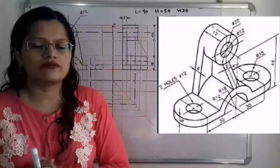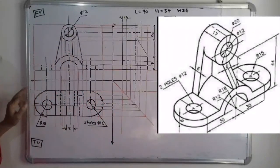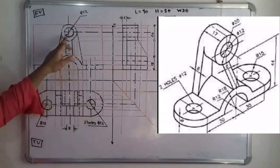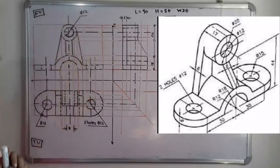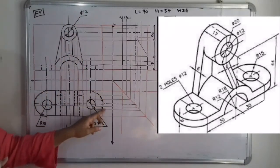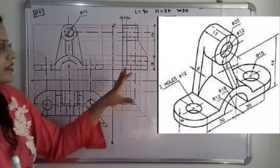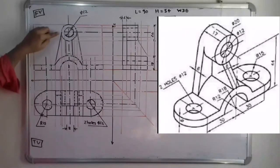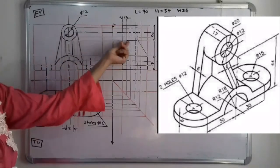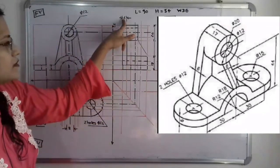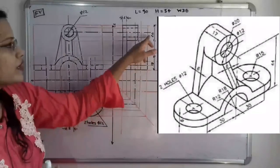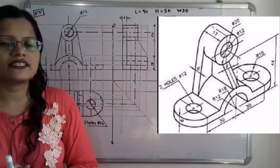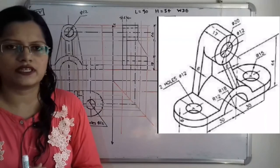Finally, we add dimensions to the orthographic projection: two holes ∅12, arc R15 for the semicircle, the rib length of 8 millimeters, and the slope width of 6 millimeters. This completes the orthographic projection for the given three dimensional object.